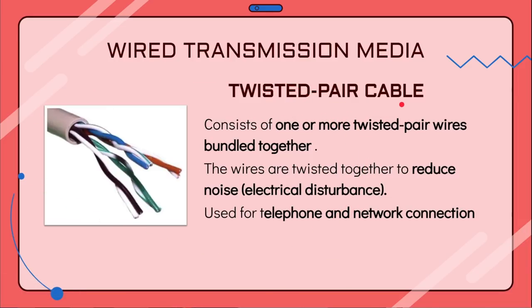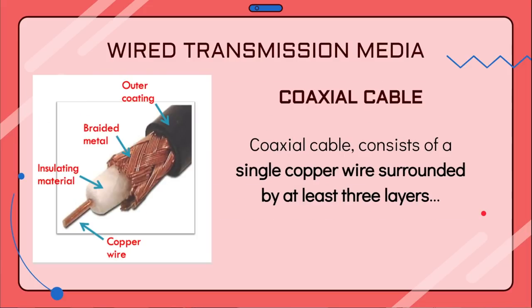Let's look at wired transmission media. First, twisted pair cable. A twisted pair cable is a set of two copper wires that have been bundled together. The wires are twisted — not just for aesthetics — but to reduce noise, which is electrical disturbance. Twisted pair cable is usually used in telephone and network connections, and it is often the cheapest option compared to other wired transmission media.